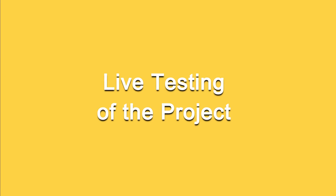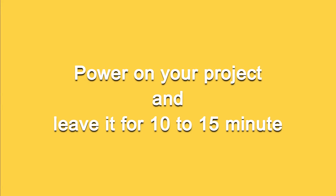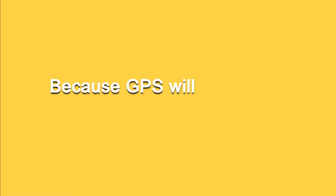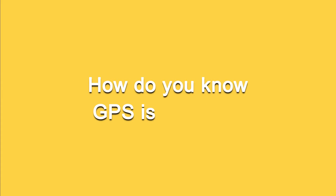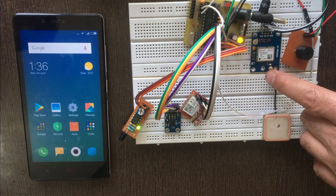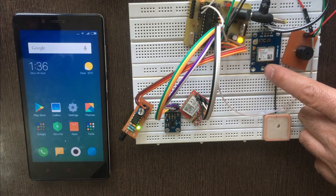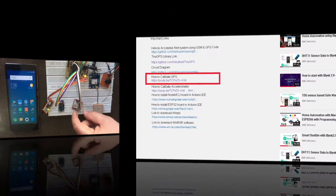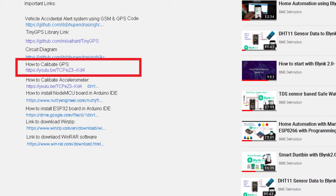Now it's time to do live testing of our project. Power up your project for 10 to 15 minutes so that GPS can fetch complete data. To check if GPS is working, look at the GPS LED — it will start glowing every second once calibrated. You can also see our video on GPS calibration, link is available in the video description.